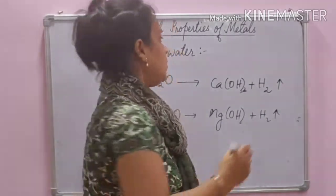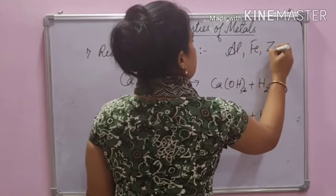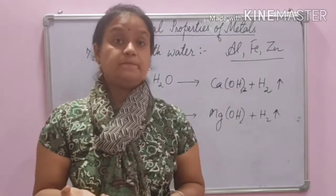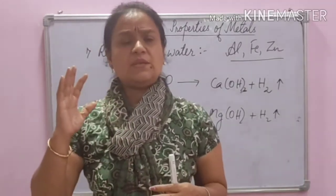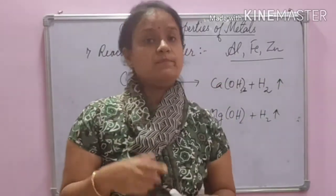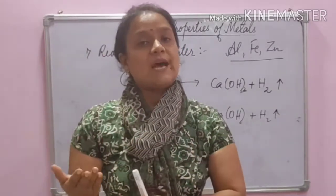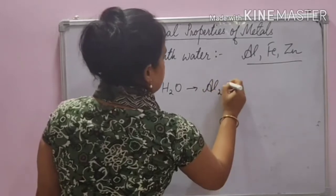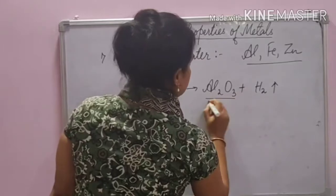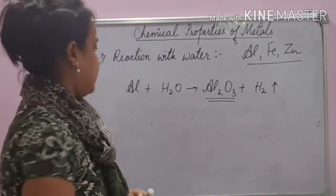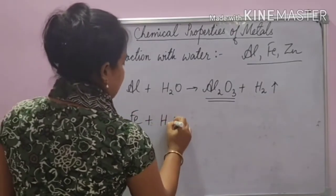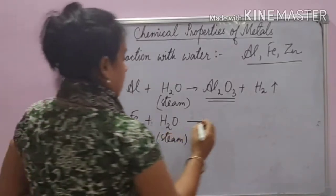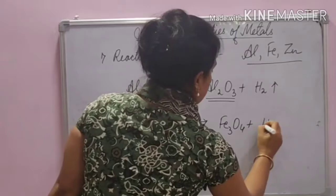Going further down the reactivity series, we find aluminium, iron, and zinc. These are less reactive and neither react with cold water nor hot water — they react only with water in steam form. On reacting with steam, they form their oxide and hydrogen gas. For example, aluminium reacts with steam to form aluminium oxide and hydrogen gas; since aluminium oxide is insoluble in water, the reaction does not proceed further. Similarly, iron reacts only with steam to form iron oxide and hydrogen gas.